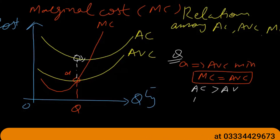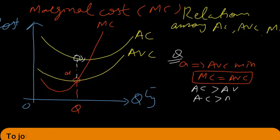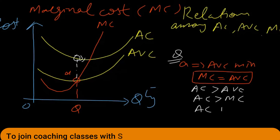At this point, average cost is still greater than marginal cost and average cost is still falling.